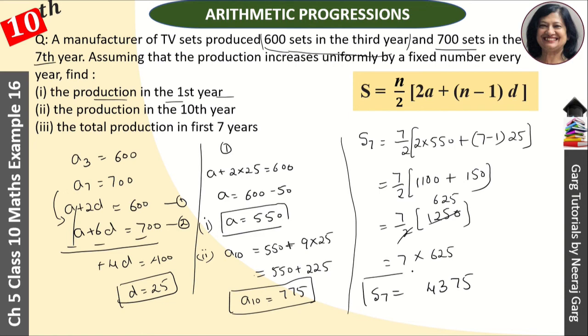So S₇ is the answer to the third part. The total production in the first 7 years is 4375. First year production was 550, tenth year production was 775, and total production in 7 years was 4375. I hope you understood the question well. If you have any doubts, you can ask in the comment section. All the best!